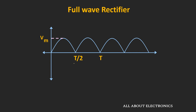One more thing to observe here: the frequency of the output waveform has been doubled, because the waveform is repeating itself after the T/2 time period. So the new time period T' is equal to T/2. Or in terms of frequency, the new frequency f' will be equal to 2f. That means the output waveform frequency will be 2 times the input waveform frequency.